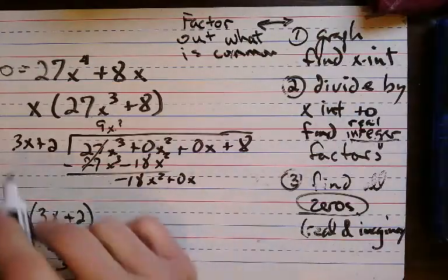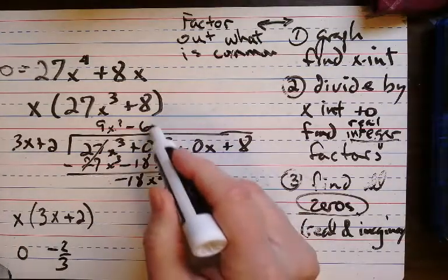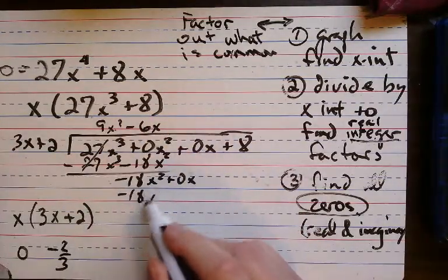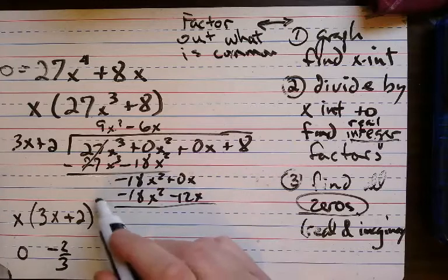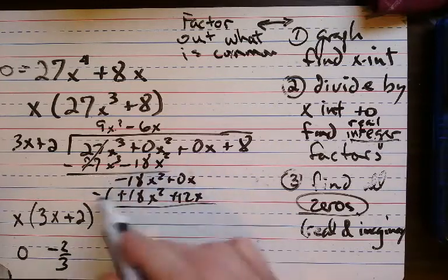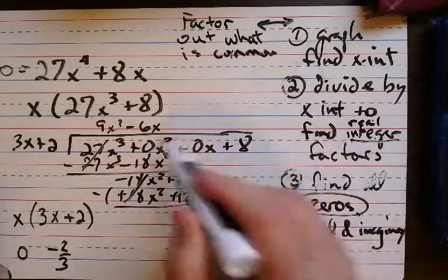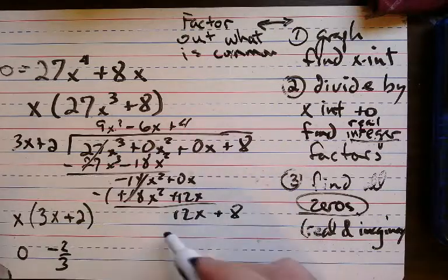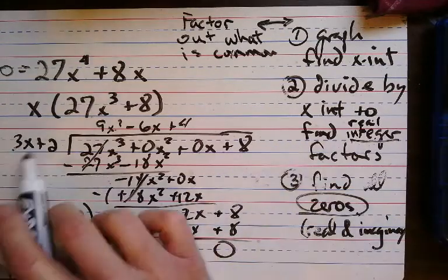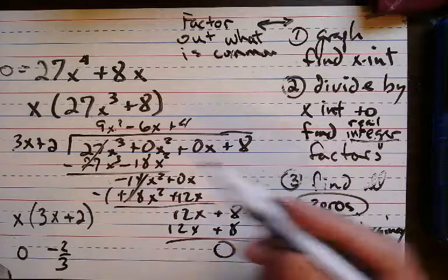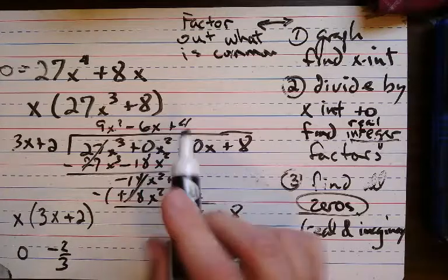I can make that negative 18 — that's minus 6. 6 times x would be negative 18. And then that would be negative 12. You subtract, so that's minus minus, which makes plus. 12x plus 8. How can I make that into 12? I need a 4. 4 times 3 would be 12, 4 times 2 would be 8. Remainder 0. So now I know the other factor: 9x squared minus 6x plus 4.